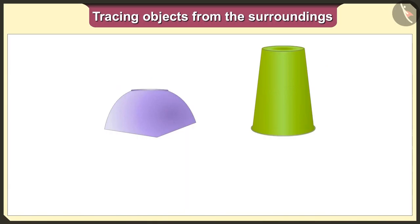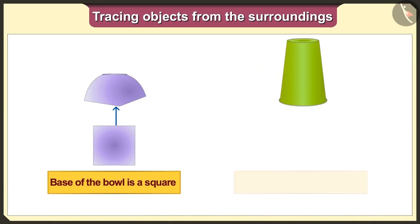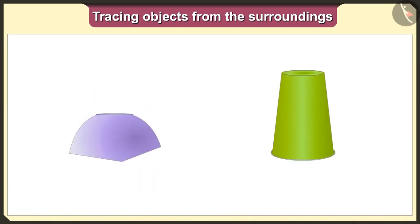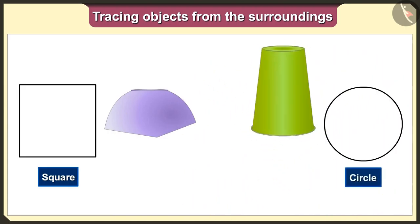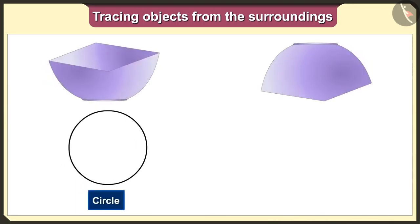Now if we keep the bowl and glass upside down, the base of the bowl is a square and the base of the glass is a circle. If we keep the bowl facing downward and trace it, we will get the square shape. And if we keep the glass facing downward and trace it, we will get the circle shape.